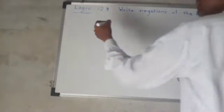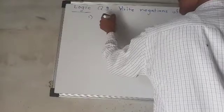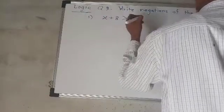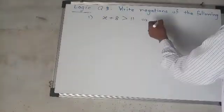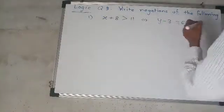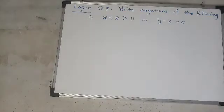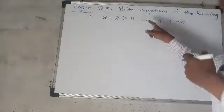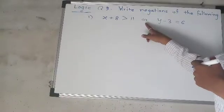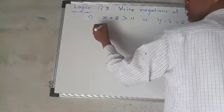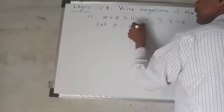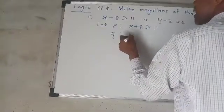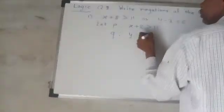First question: x plus 8 greater than 11, or y minus 3 is equal to 6. The compound statement is a disjunction. Let P: x plus 8 greater than 11, and Q: y minus 3 is equal to 6.